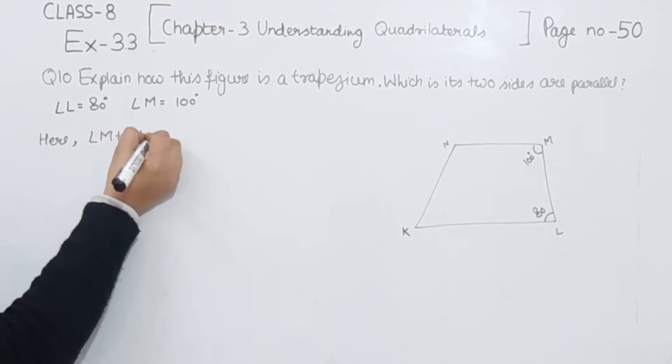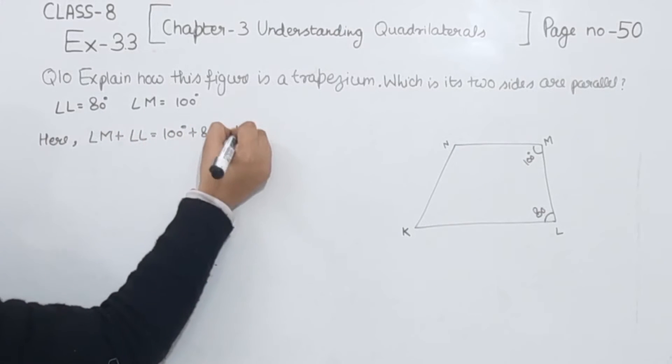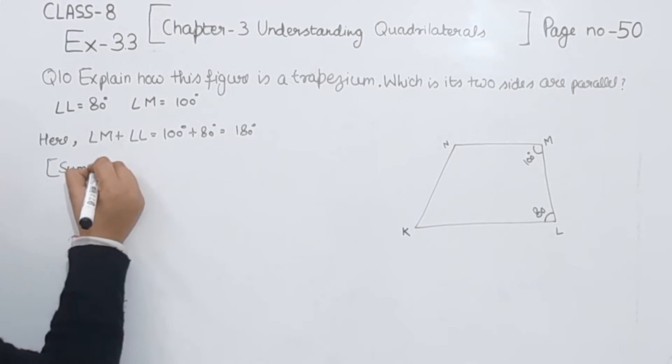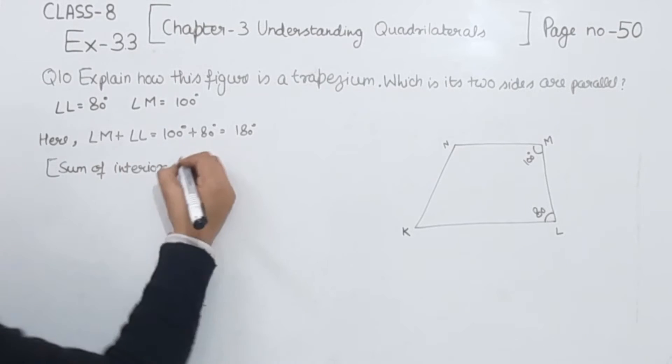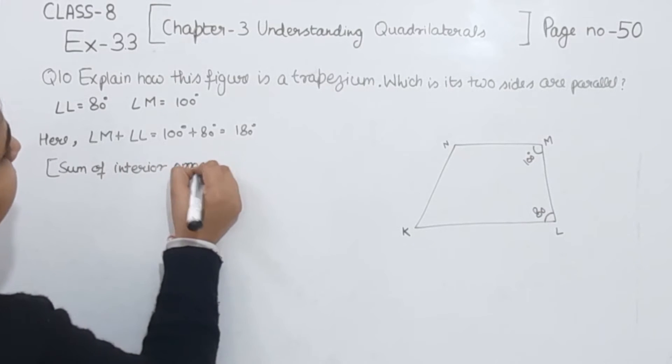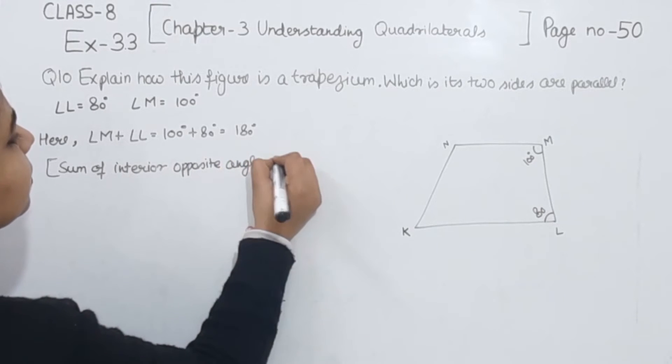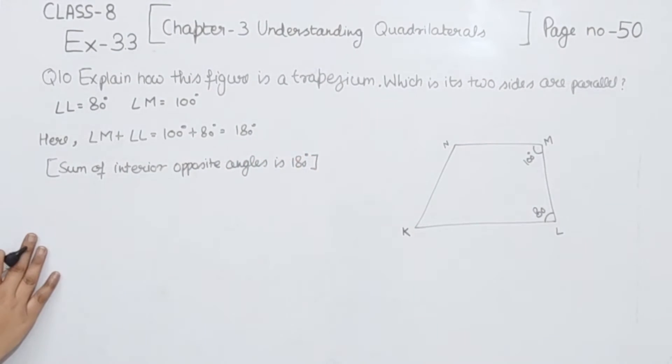So now we are going to write here angle M plus angle L is equal to 100 plus 80. This one is 180. Why we have added them? Because they are the interior opposite angles. So I am going to write here sum of interior opposite angles is 180 degrees.